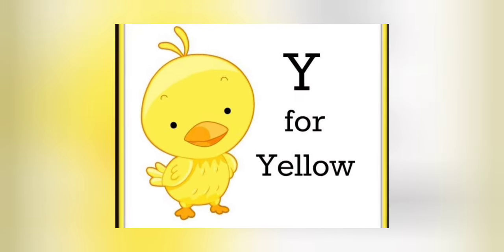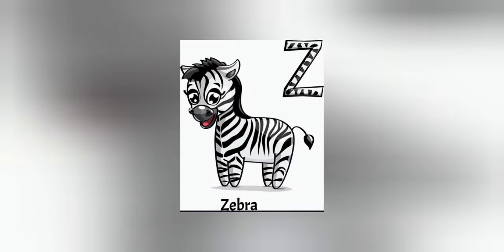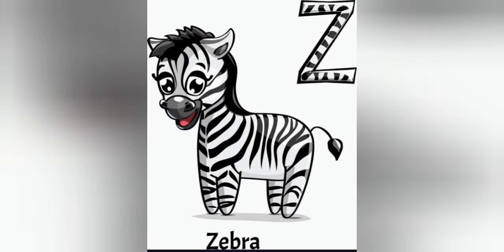Y is for yellow, y-y-yellow. Z is for zebra, z-z-zebra.